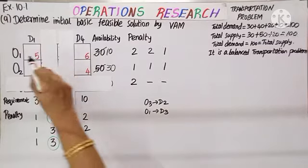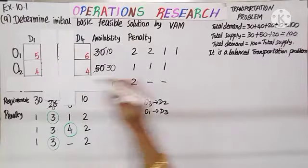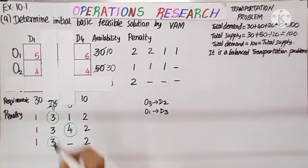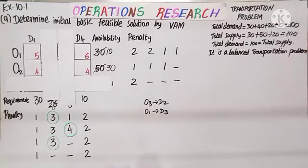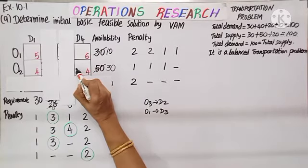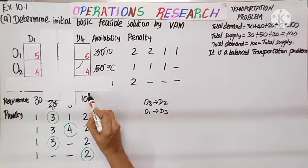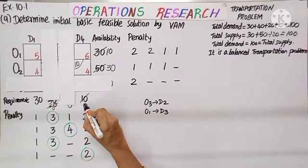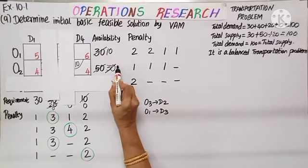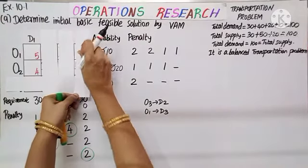Calculating the penalty again. O1 row: 6 minus 5 is 1. O2 row: two costs are same (4 and 4), so no penalty — use next higher: 5 minus 4 is 1. Column-wise: D1 — 5 minus 4 is 1; D4 — 6 minus 4 is 2. Out of the 3 penalties, 2 is the largest. We select D4 column — the minimum cost is 4, so this is the selected cell. Supply is 30 and demand is 10 — minimum is 10, so we allocate 10. Demand for D4 becomes 0, and supply becomes 30 minus 10, which is 20. Eliminate D4.